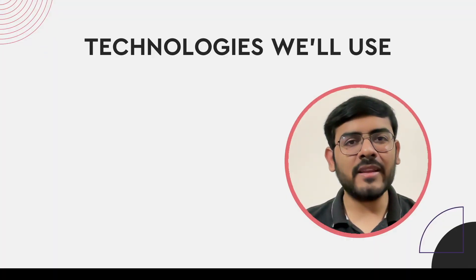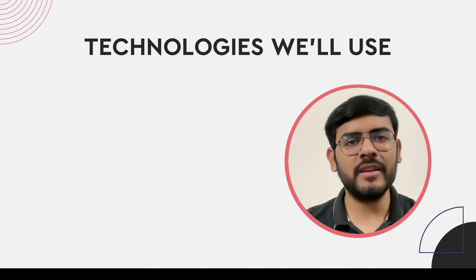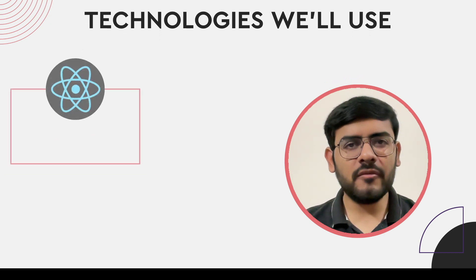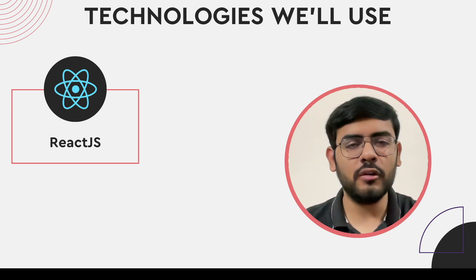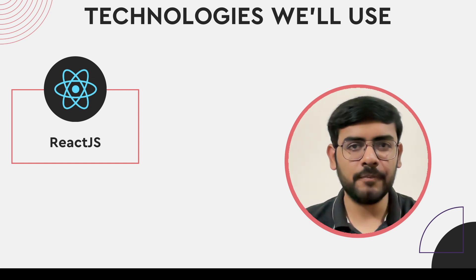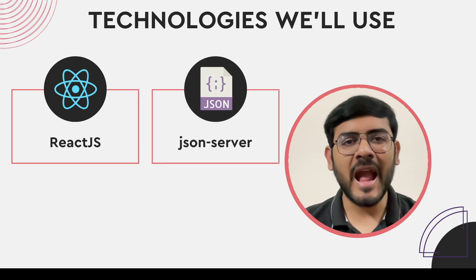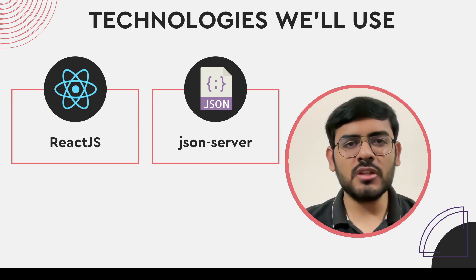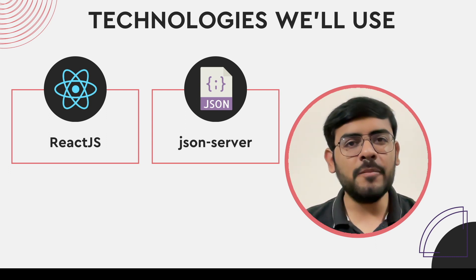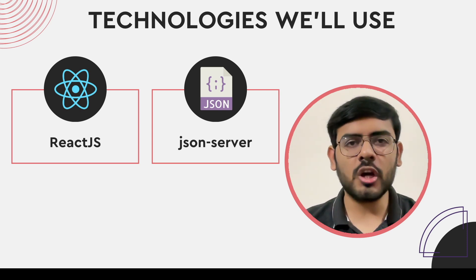Now that we've taken a look at the output, let's quickly discuss the technologies we need to build this application. First up, we have React.js — this is what we'll use to build the entire frontend, all the UI, all the frontend logic and functionality. Then for the backend, we're going to use a very handy NPM package known as JSON server. This package allows us to run a dummy or mock JSON server from within our system, and it behaves exactly like the data is coming from a proper API.